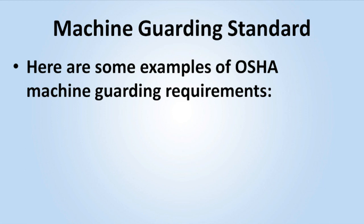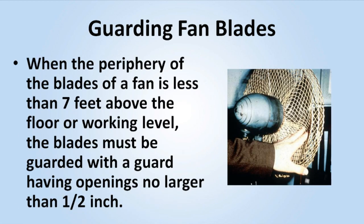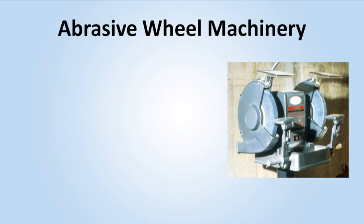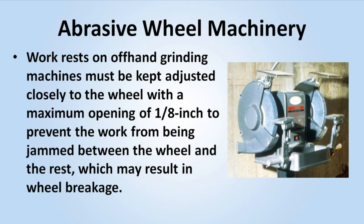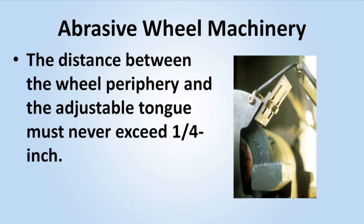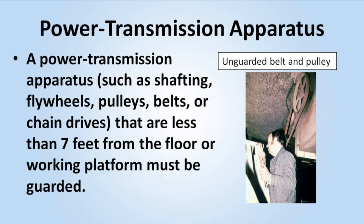Here are some examples of OSHA machine guarding requirements. When the periphery of the blades of a fan is less than seven feet above the floor or working level, the blades must be guarded with a guard having openings no larger than half an inch. Work rests on off-hand grinding machines must be kept adjusted closely to the wheel with a maximum opening of one-eighth of an inch to prevent the work from being jammed between the wheel and the rest, which may result in wheel breakage. The distance between the wheel periphery and the adjustable tongue must never exceed a quarter of an inch. A power transmission apparatus such as shafting, flywheels, pulleys, belts, or chain drives that is less than seven feet from the floor or working platform must be guarded.